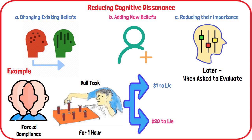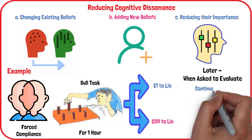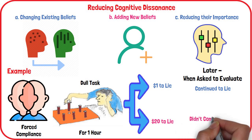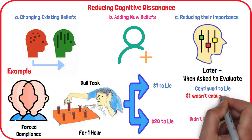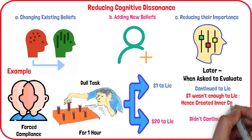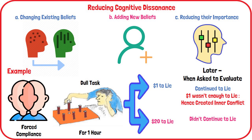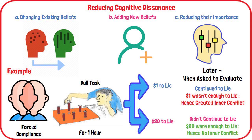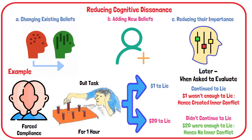Later, when the participants were asked to evaluate the experiment, those who were paid only $1 rated the boring task as more fun and enjoyable than those who were paid $20 to lie. Being paid only $1 was not a sufficient enough incentive for turning pegs and lying, so those who were paid only $1 experienced dissonance. To overcome this inner conflict, they convinced themselves that the task was interesting and enjoyable. Being paid $20 appeared to be a good enough reason for turning pegs and lying, and hence there was no dissonance and no need to change their belief.